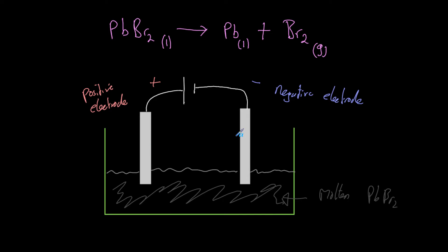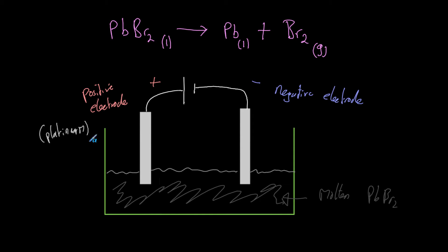The electrodes are just pieces of metal, and we pick a really unreactive metal because we don't want the electrode to take part in a reaction. For example, if the electrode were sodium, bromine forming at one electrode would just react with it and form sodium bromide — that's not what we want. A lot of the time electrodes are made of platinum, because platinum is very unreactive. When we need to keep costs down and need a large electrode, we sometimes use carbon instead.